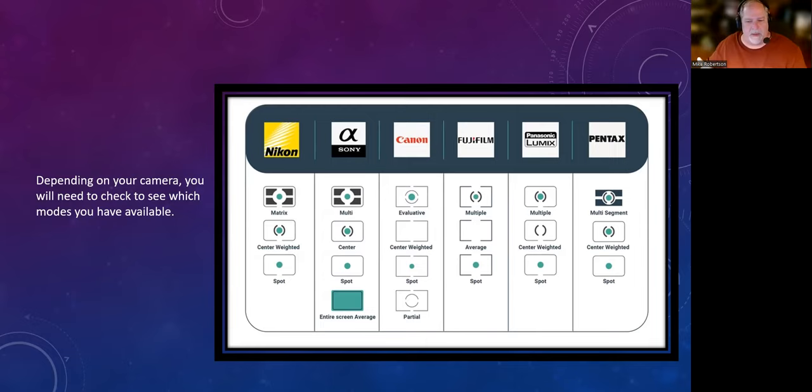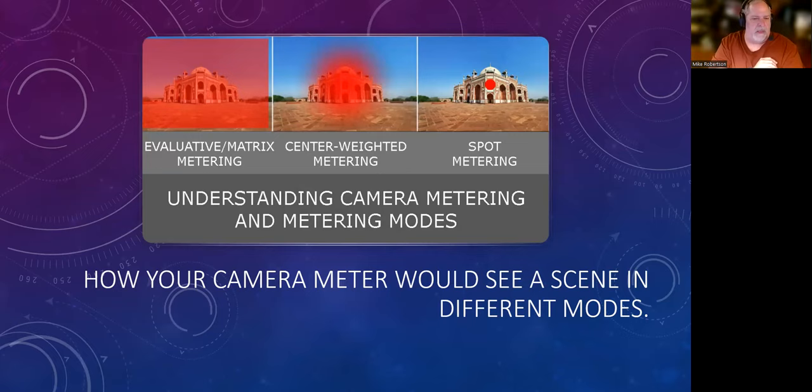pull it out, try to find your metering mode, because this will, again, this is something that's going to be able to help you as you move along. As you look at a scene, this would be kind of the way your camera would see the same scene in three different metering modes. So evaluative or matrix metering, it's going to look at the whole thing. But again, in this particular instance, it would put more weight towards the center because that's where your focus point probably is going to be.